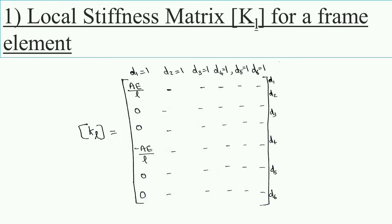Writing in matrix form, the local stiffness matrix KL for D1 = 1 gives the column: AE/L, 0, 0, −AE/L, 0, 0. Similarly, we can fill the other terms in the matrix by setting each remaining displacement equal to 1.